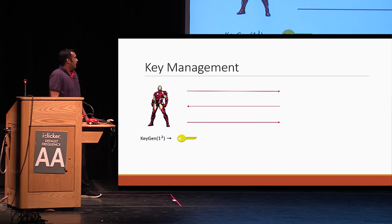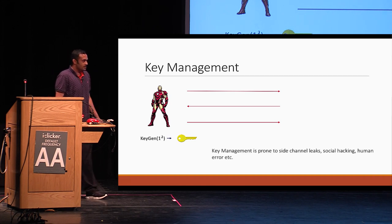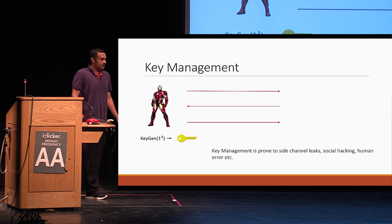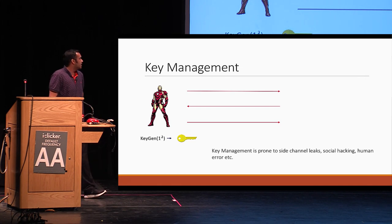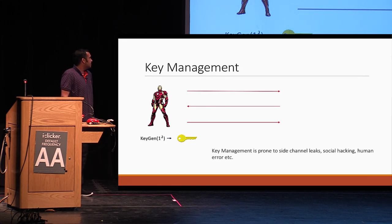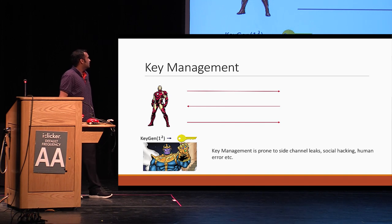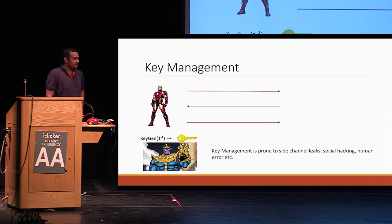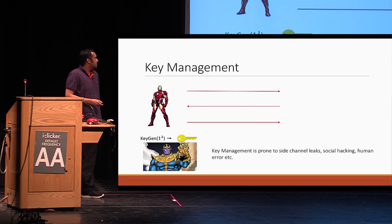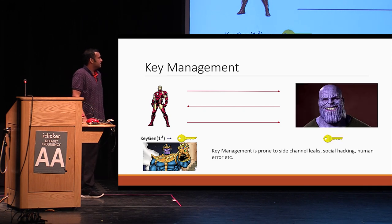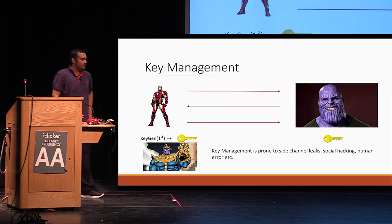But as we all know, key management is a hard problem, and it's prone to all sorts of attacks, such as side channel leaks, social hacking, human error, and so on and so forth. So now if Thanos gets access to Tony's key, he can understand everything, and he's happy to see all over again.